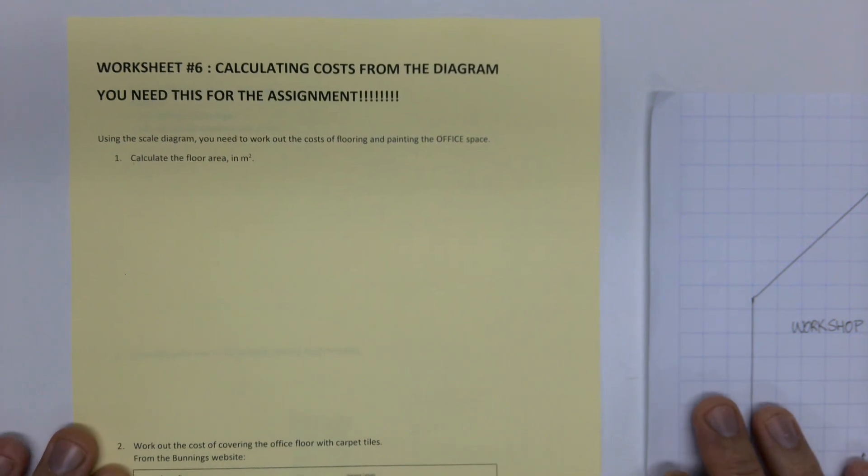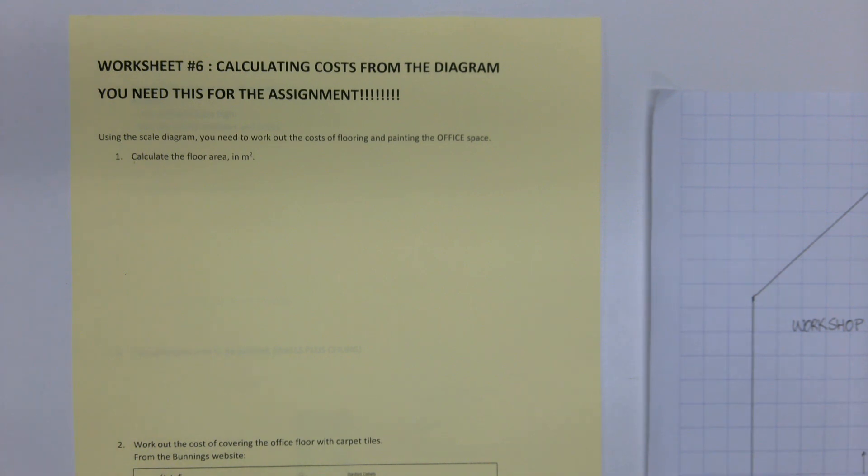So now we need to know how to do this section, which is directly related to a chunk of the assignment. You are going to get a small enclosed part of your workspace, your workshop, whatever you've designed, and you're going to figure out the cost of flooring and the cost of painting it.